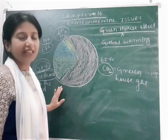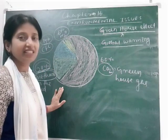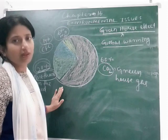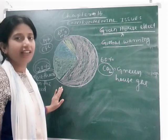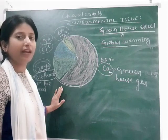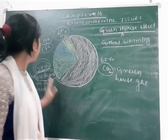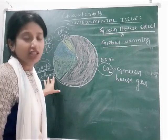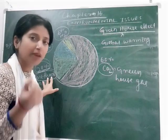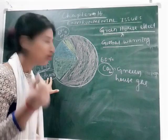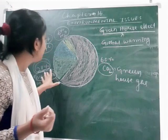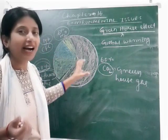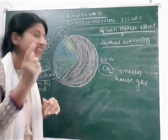Methane gas is released due to degradation. The regular degradation of different organic materials releases methane, and harmful smokes or gases also contain methane. These go into the atmosphere and increase the temperature inside the earth.